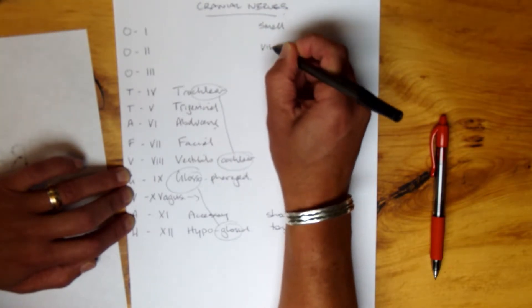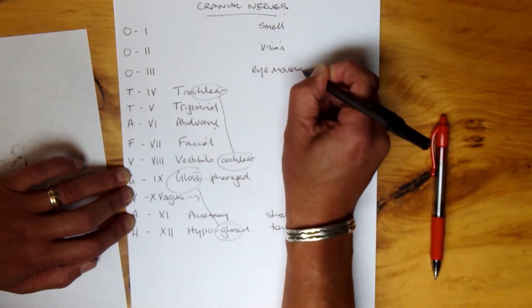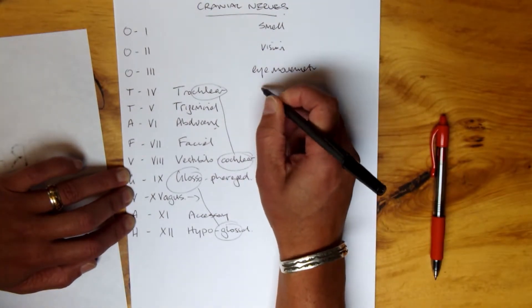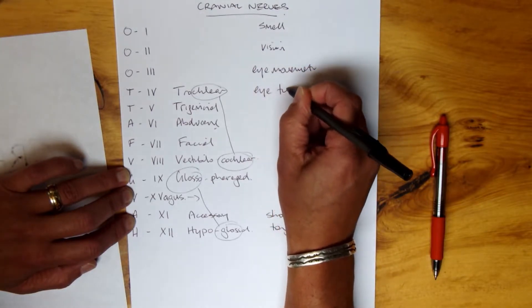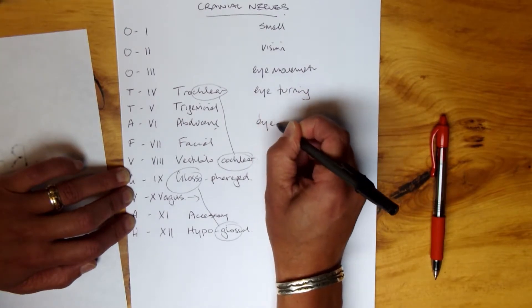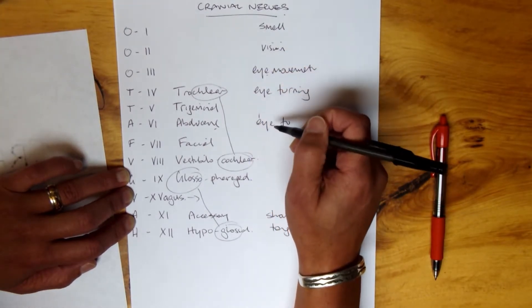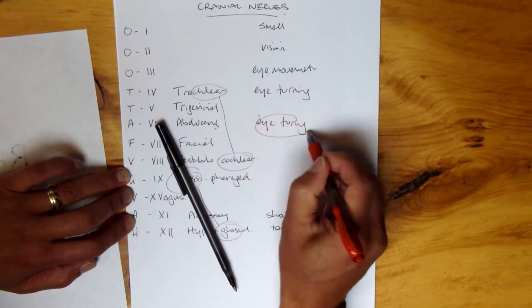These O's, well, it's easy to remember the function. The first one is smell, then vision, and then eye movement, then eye movement. I would simply, you know, four is also eye movement, but I just put here eye turning, slightly different, and six is eye turning.